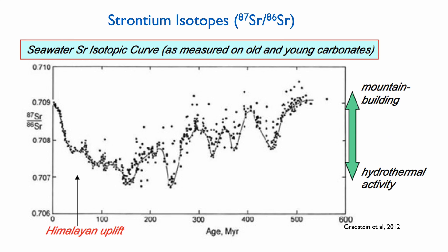Carbon and oxygen are not the only two isotopes we can use for that. We can also use something very commonly used, which is strontium isotopes. Here is a compilation of strontium isotope values of the ocean over the last 500 million years, put together by Gratstein. We have peaks and troughs and general trends in strontium isotope.